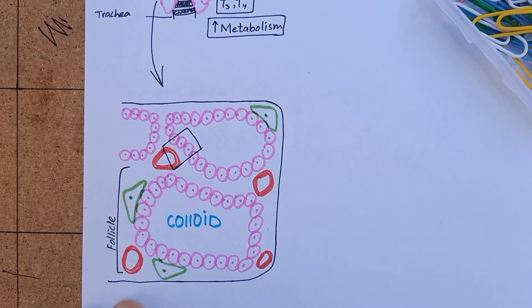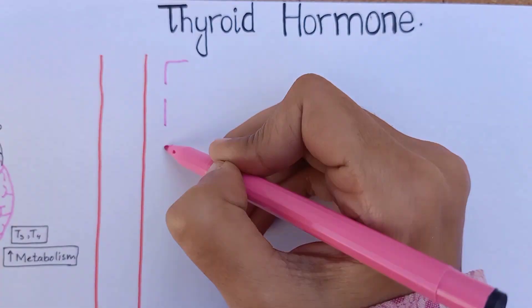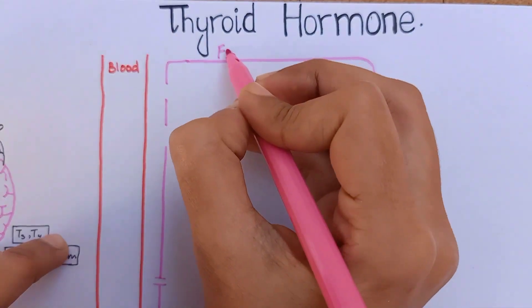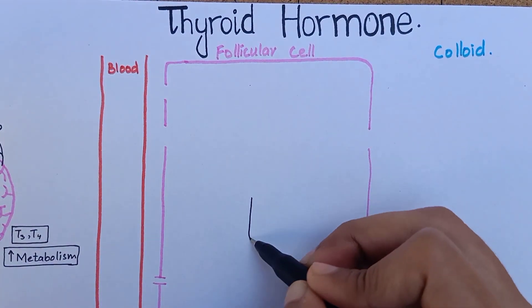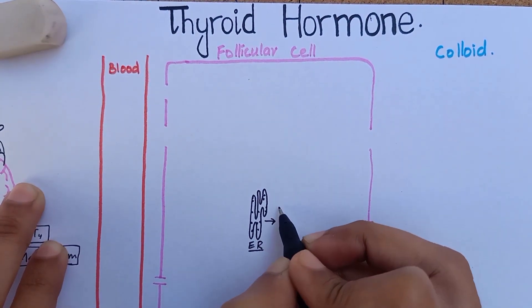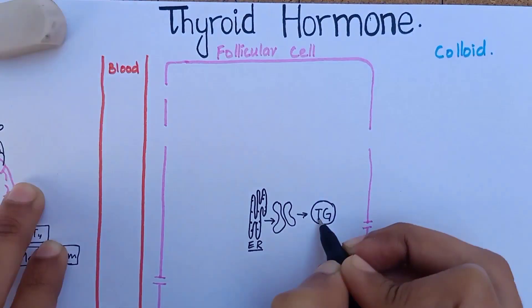Let's magnify one epithelial cell in order to understand the mechanism of formation of thyroid hormones. There are blood capillaries surrounding the follicular cell and the lumen of follicle that contains colloid. Inside the follicular cell, the endoplasmic reticulum and Golgi apparatus synthesize this glycoprotein molecule called thyroglobulin.